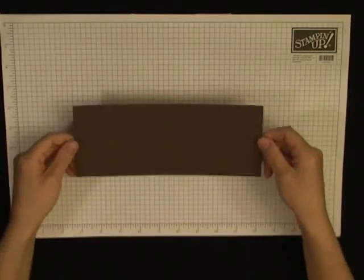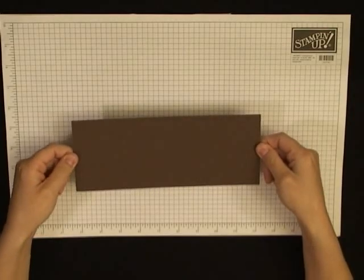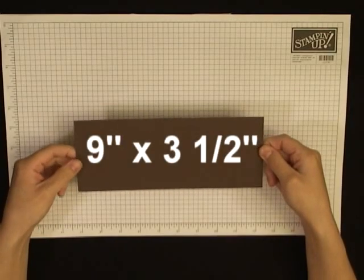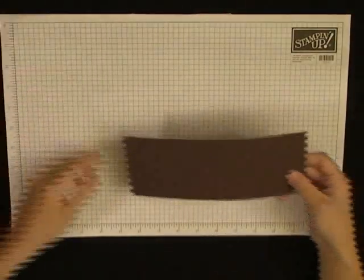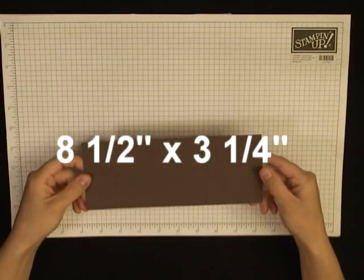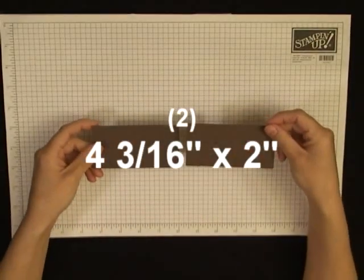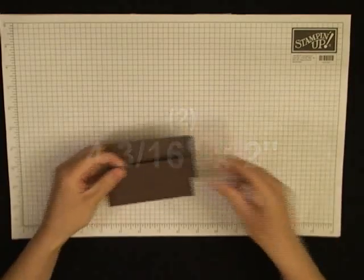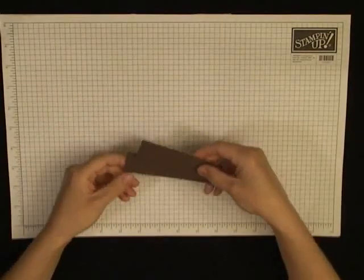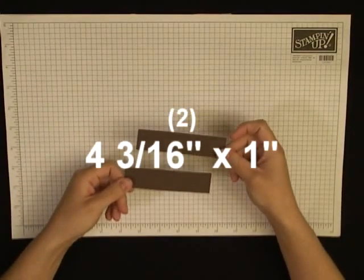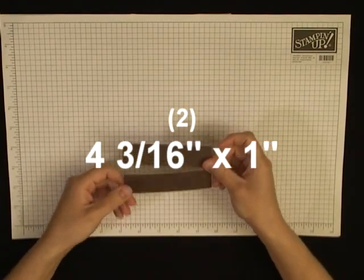To start with, I'm going to tell you all the dimensions of the card stock you need. You need one piece of nine inch by three and a half inch chocolate chip card stock. One piece that's eight and a half by three and a quarter. Two pieces that are four and three sixteenths inch by two inches. Two pieces that are four and three sixteenths inch by one inch.